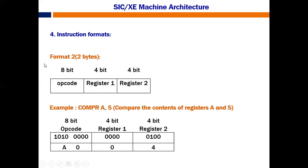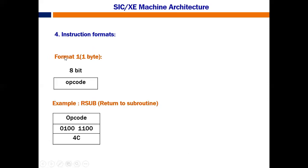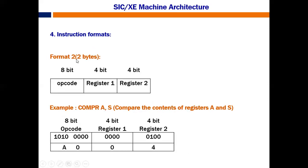Format 2 is the second instruction format, taking 2 bytes of memory, that is 16 bits. In format 2, the opcode takes 8 bits. There is no memory address involved. Register 1 takes 4 bits and Register 2 takes 4 bits.